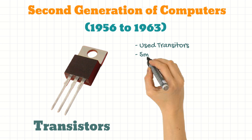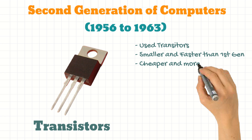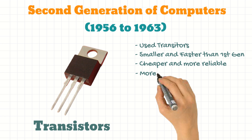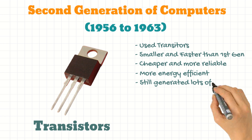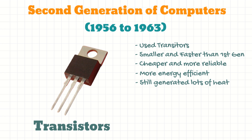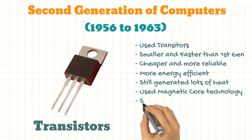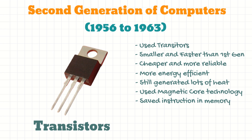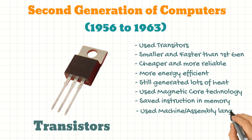This made the computers smaller, faster, cheaper and more reliable. They were more energy efficient though they still generated a lot of heat. They were also the first computers to use magnetic core technology to store instructions in memory. They used machine and assembly language to program.